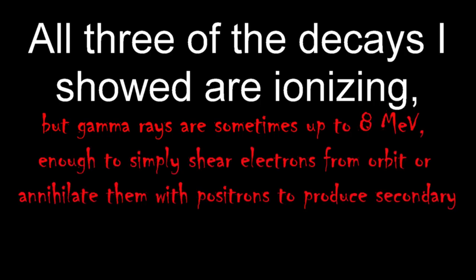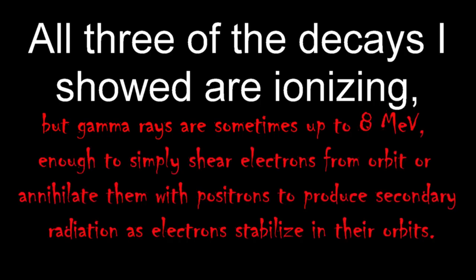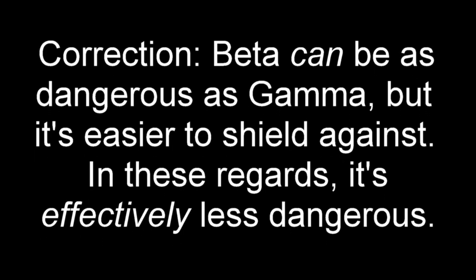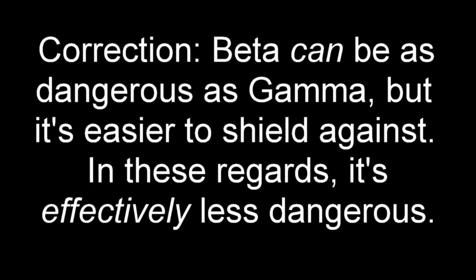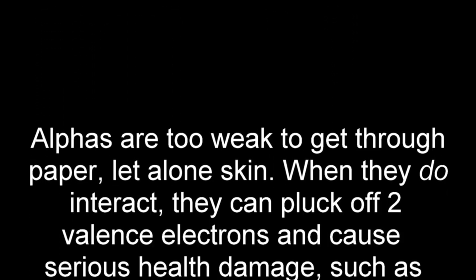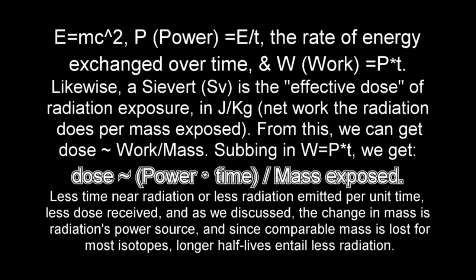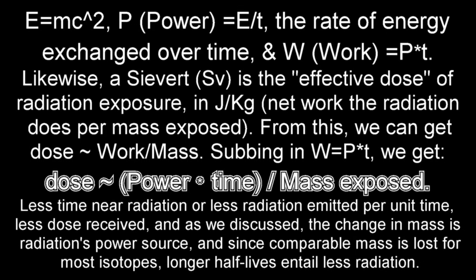Alpha decay is the weakest and heaviest discharge from the nucleus. It spits out two neutrons, two protons, in other words, a helium-4 nucleus. Beta and gamma decays usually are from the collapses of neutrons. Most isotopes lose comparable amounts of mass. It's not the fact that these emissions exist that makes radiation dangerous, but it's how much exposure happens within a given amount of time, and how much damage can occur from that exposure.